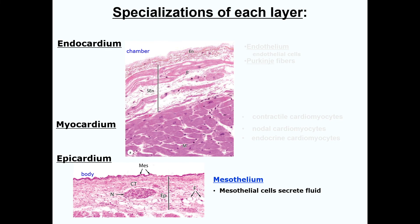Last but not least, we have the epicardium. The lining of the epicardium, or the mesothelium, secretes a lubricating fluid which allows the heart to move as it contracts and jumps around in the chest cavity. By now, we've pretty well covered the histological attributes of the regions, layers, and some of the specialized functions of cells within the heart.